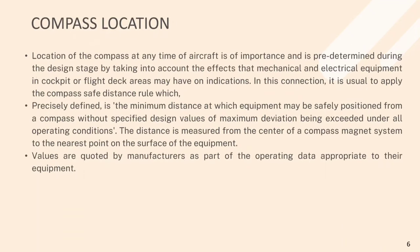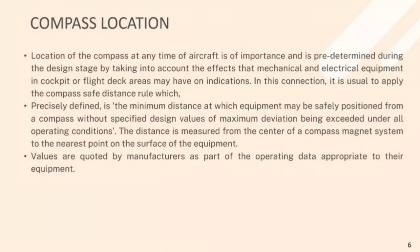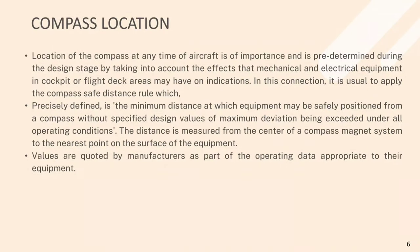The location of the compass in an aircraft is of importance and is predetermined during the design stage by taking into account the effects that mechanical and electrical equipment in the cockpit or flight deck areas may have on indications. It is usual to apply the compass safe distance rule, which is the minimum distance at which equipment may be safely positioned from a compass without specified design values of maximum deviation being exceeded under all operating conditions. This distance is measured from the center of the compass magnet system to the nearest point on the surface of the equipment, with values quoted by manufacturers as part of operating data.